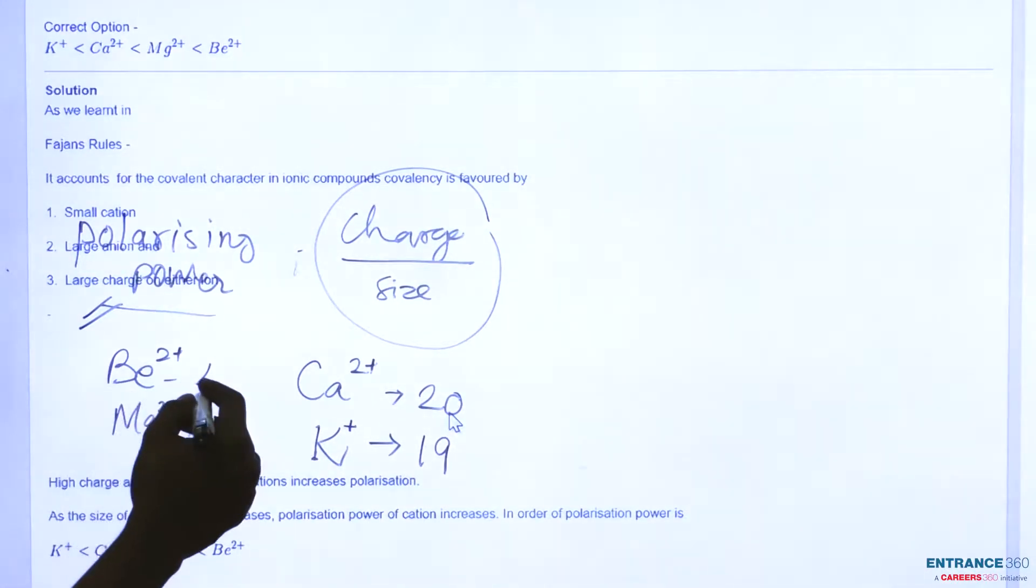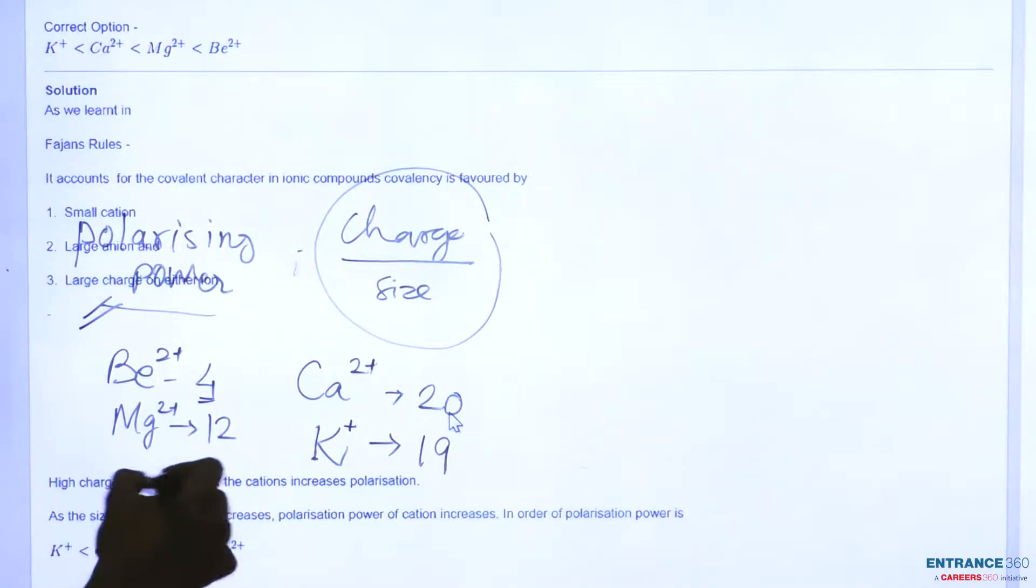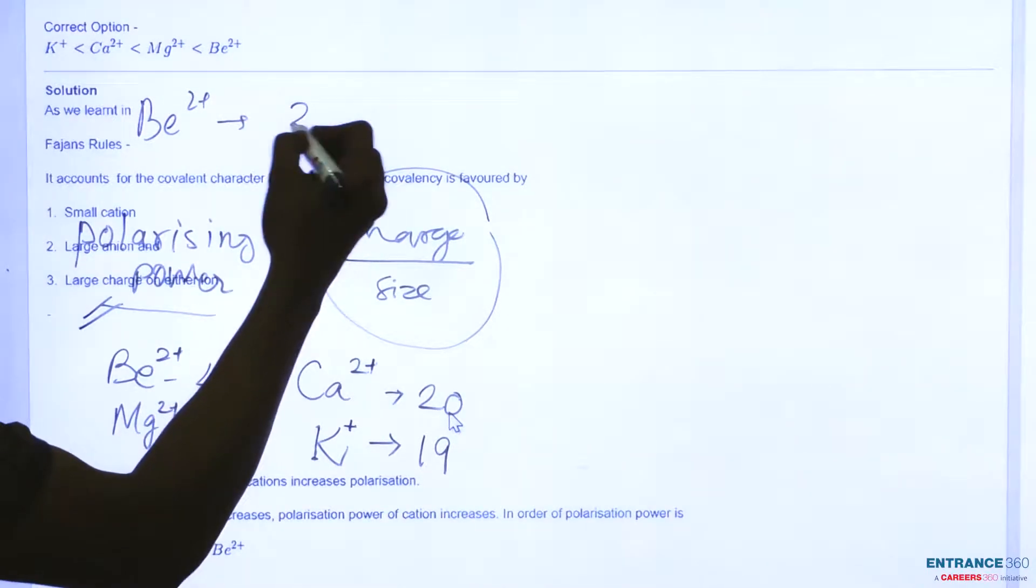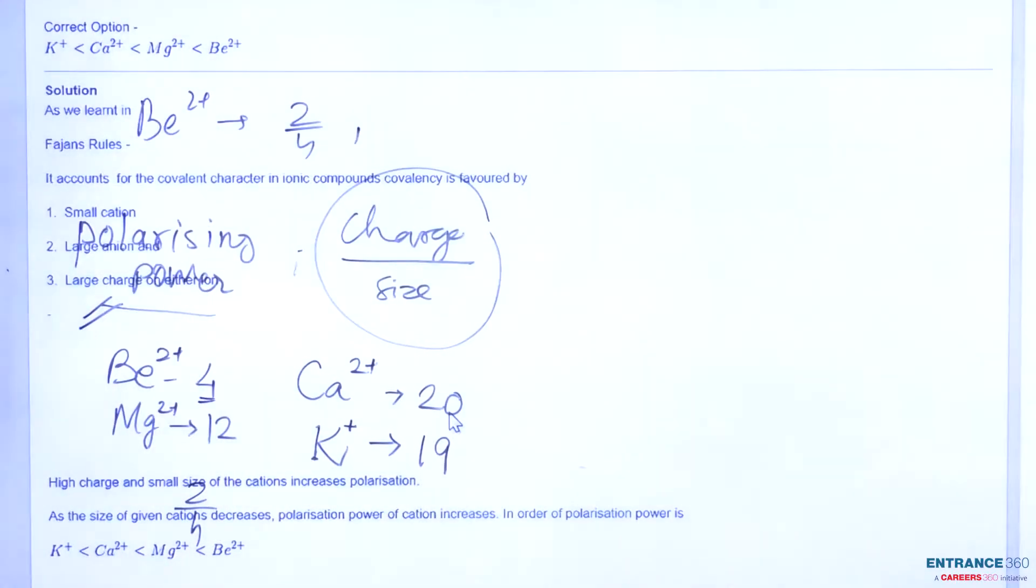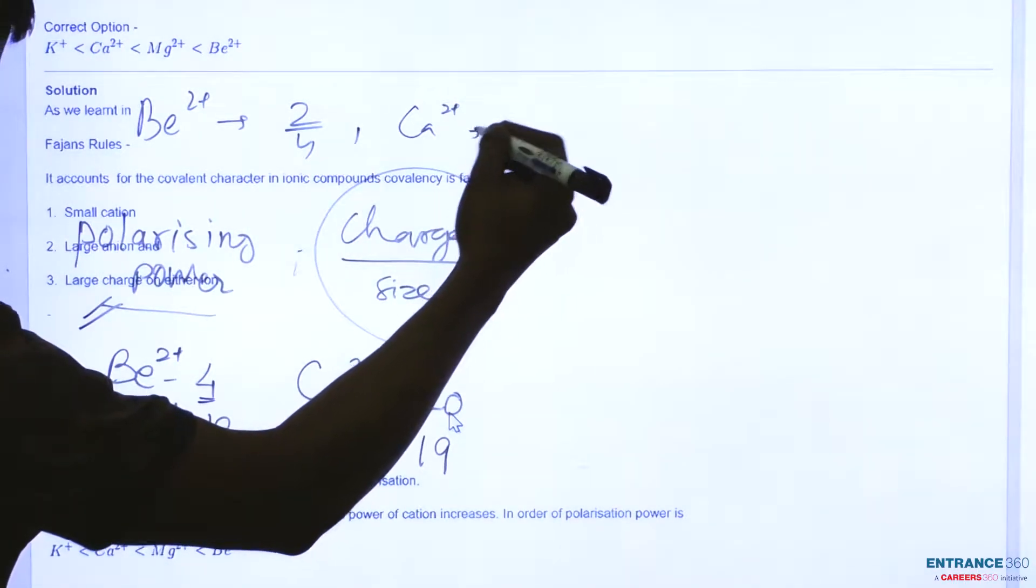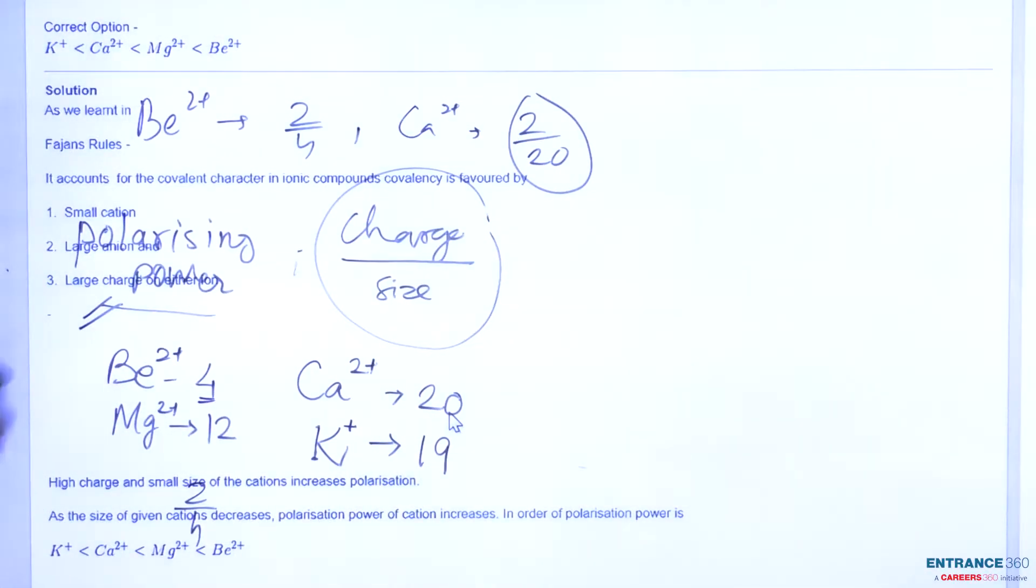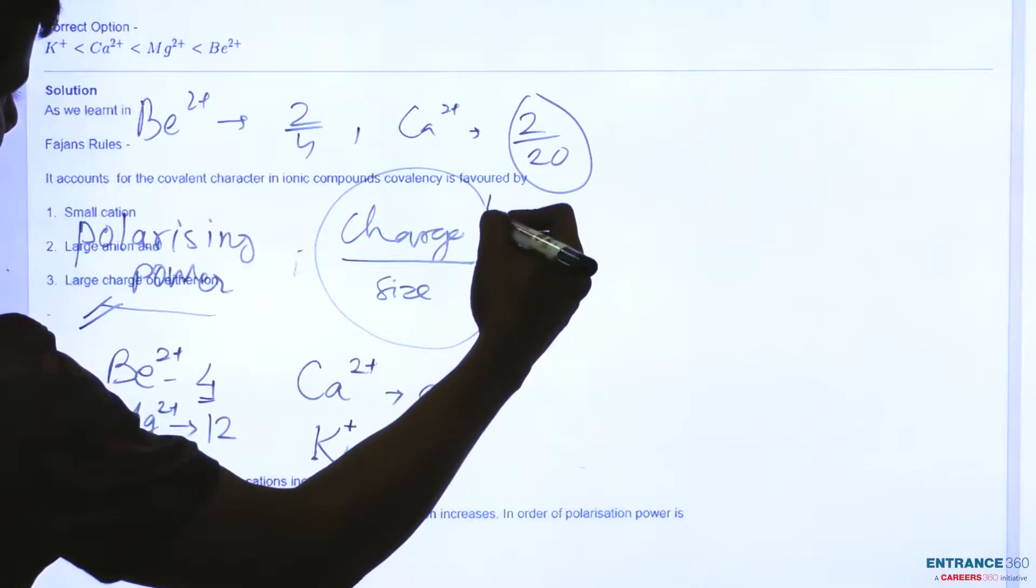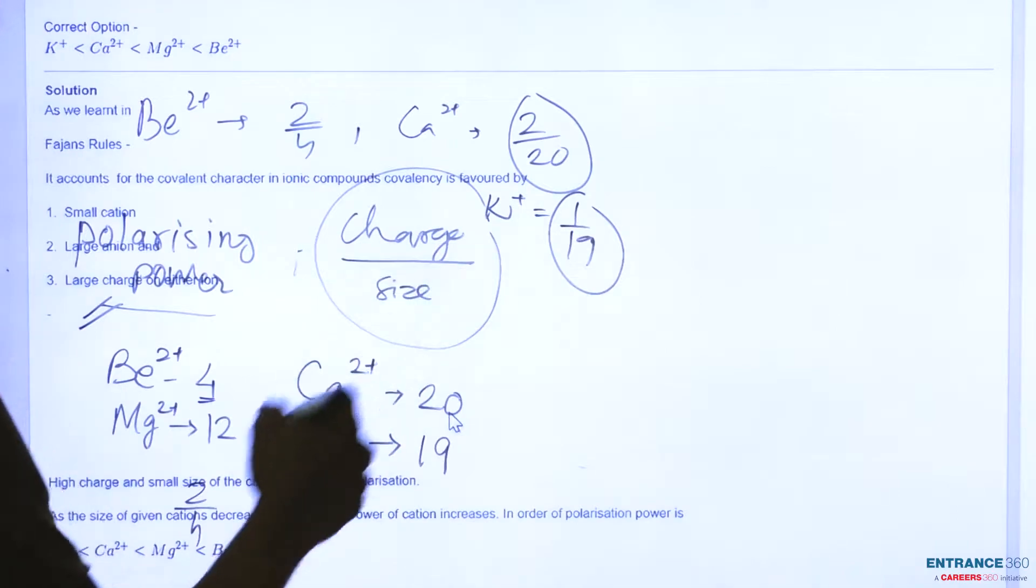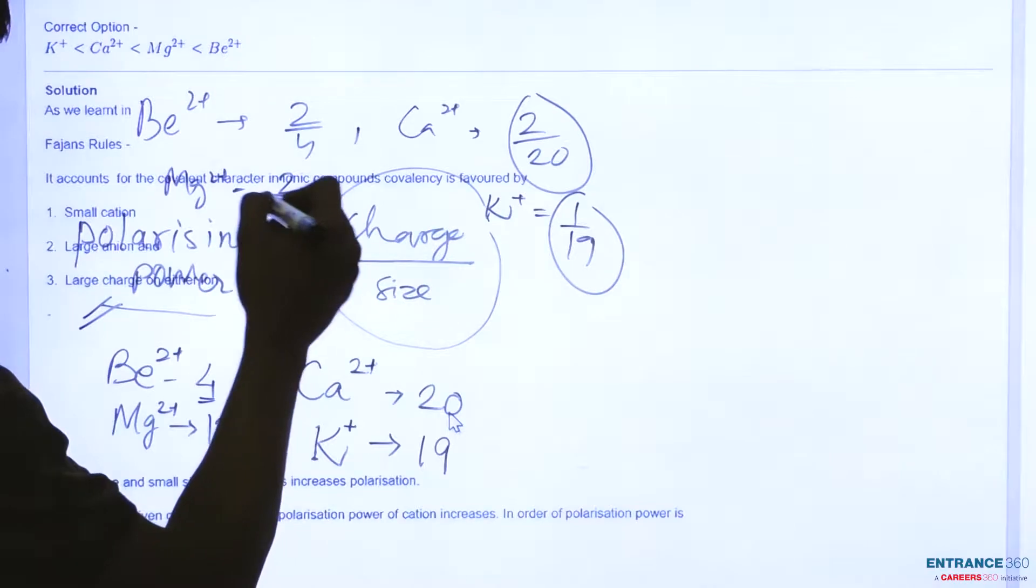For beryllium we can say that this will have charge of 2 and size 4, so this will give us 2/4. Similarly for calcium 2+, 2/20, so this will be a very smaller value. Also for potassium this will have only 1/19. For magnesium this will have 2/12.